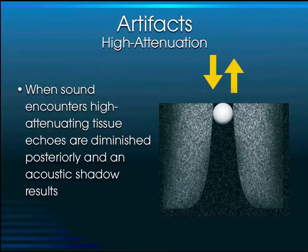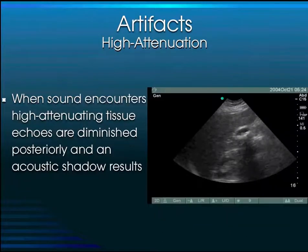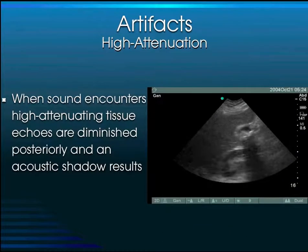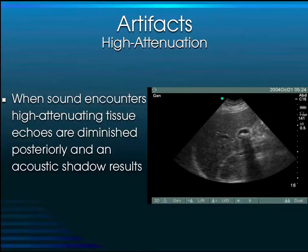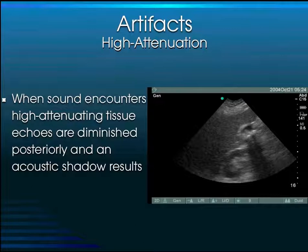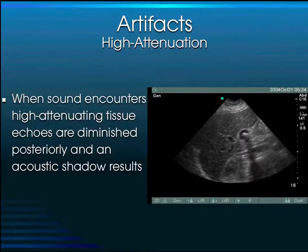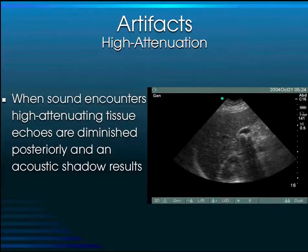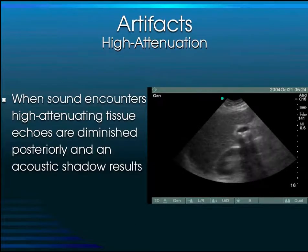If sound encounters high-attenuating tissue, the echoes posterior to it get diminished — this is called an acoustic shadow. This happens with very high-density tissue such as gallstones. The sound is attenuated or weakened as it encounters the gallstones, and that acoustic shadow is what defines the presence of a gallstone.